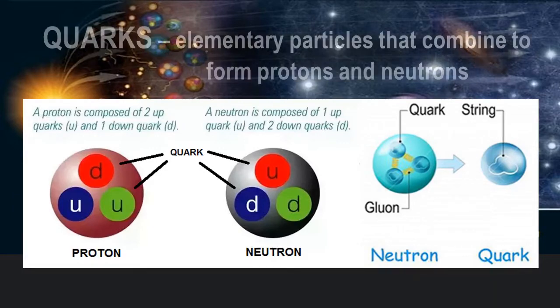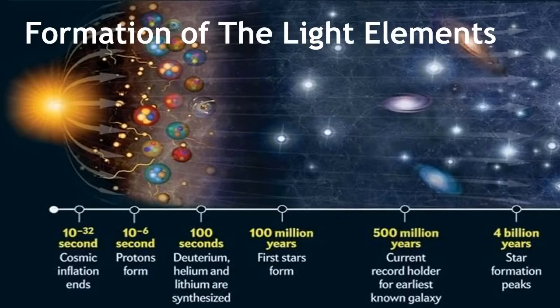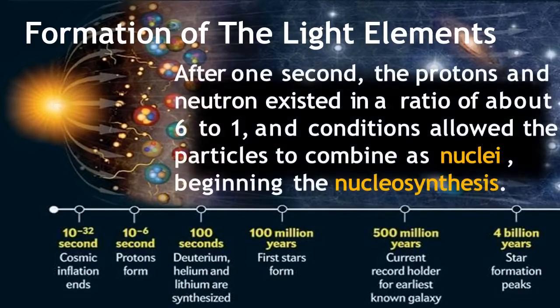Here is an illustration of quarks, the elementary particles that combine to form protons and neutrons. After a second, the protons and neutrons existed in a ratio of about 6 to 1, and conditions allowed the particles to combine as nuclei, beginning the nucleosynthesis.